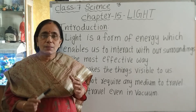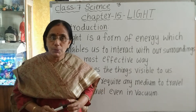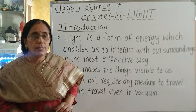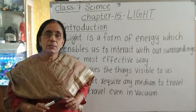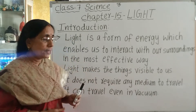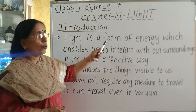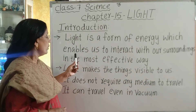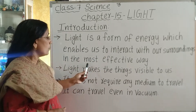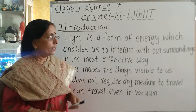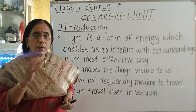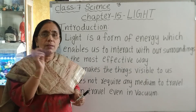Light is something that makes things visible to us. We can say that light is a form of energy that enables us to interact with our surroundings in the most effective way — meaning visual interaction. We can see things in our surroundings because of light.